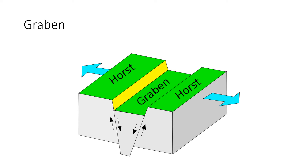The center of Death Valley is known geologically as a graben, a down-dropped block of crust between two higher blocks known as horsts. The word graben means grave. As the crust is stretched apart, the graben falls down along faults — normal faults, to be precise.